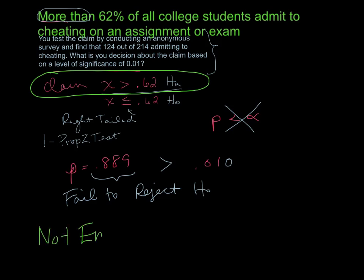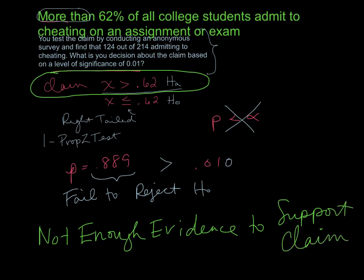there was not enough evidence, which is always what you write when you failed to reject, not enough evidence in this case to support the claim. And we write support because our claim was an H_A.